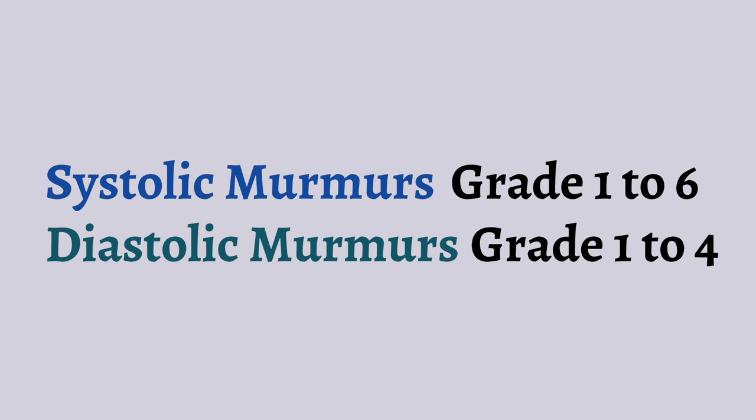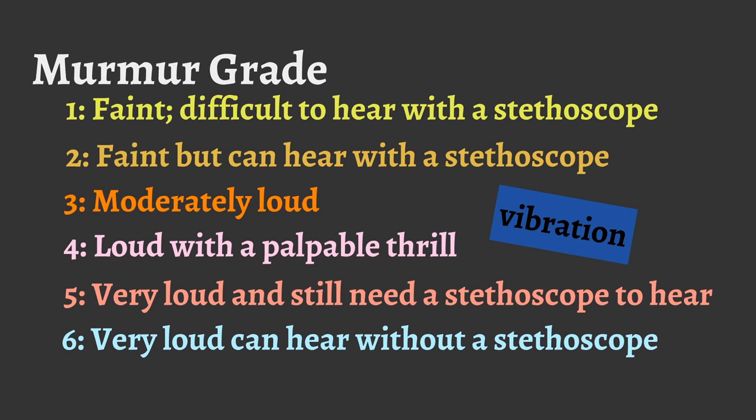Murmurs are graded on a scale of 6 for systolic murmurs and 4 for diastolic murmurs. Grade 1 indicates a faint murmur that is difficult to auscultate. Grade 2 is a faint murmur that can be identified easily. Grade 3 is a moderately loud murmur. Grade 4 is a loud murmur where you can feel a thrill or vibration on the chest wall. Grade 5 is a murmur that is loud but still needs a stethoscope to appreciate, while a grade 6 murmur can be heard even without using a stethoscope.